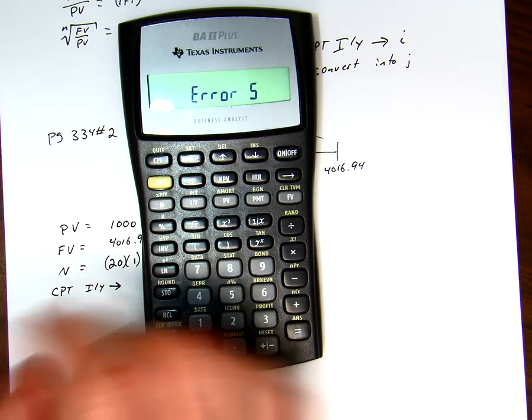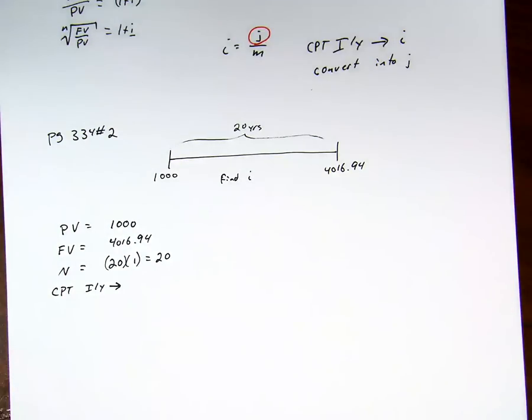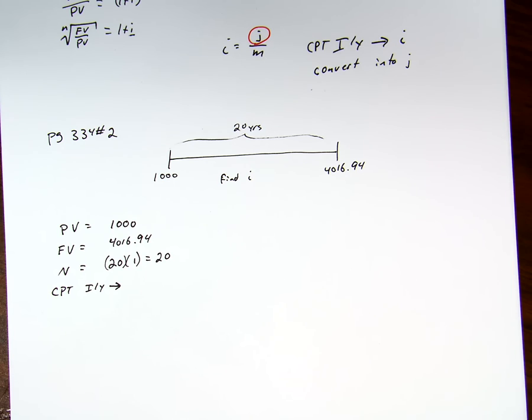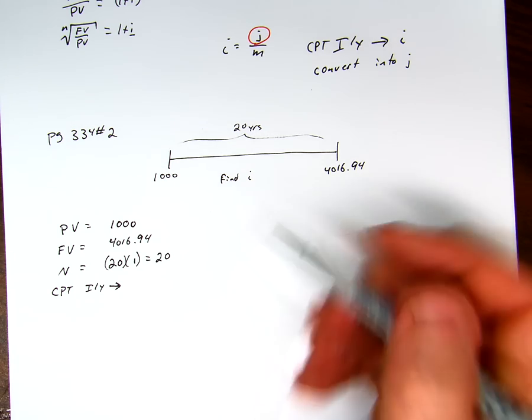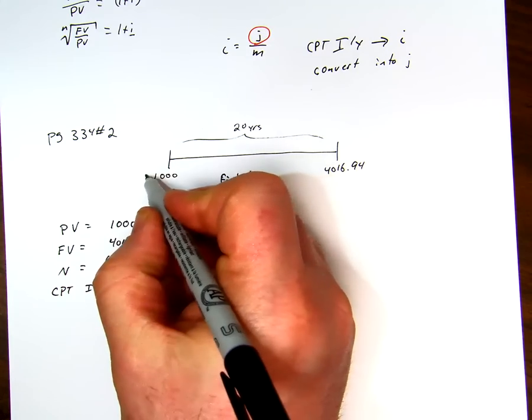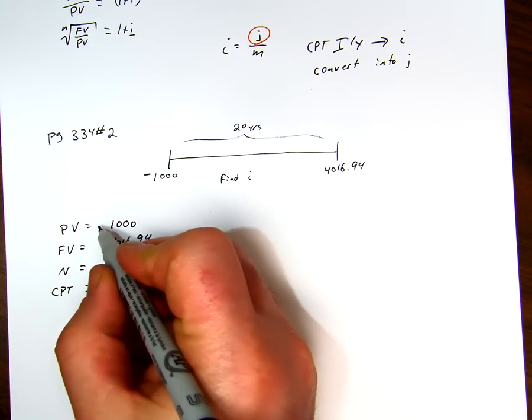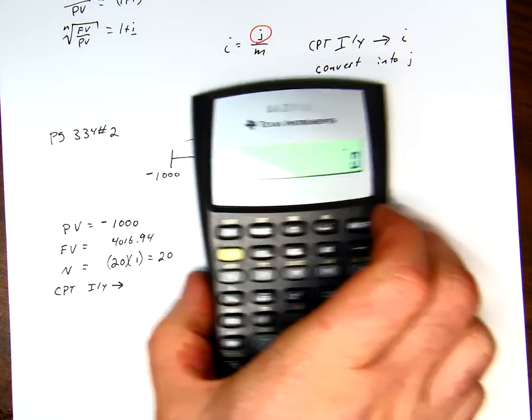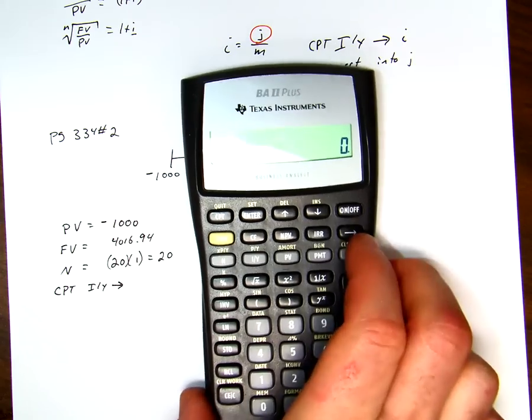And the reason why it says error 5, is we're looking for a value that we can get $1,000 now and get $4,000 later. Remember, we had to use the cash flow notation. So either this needed to be negative, or that needed to be negative. So we'll make this negative $1,000. Do the same calculation again.